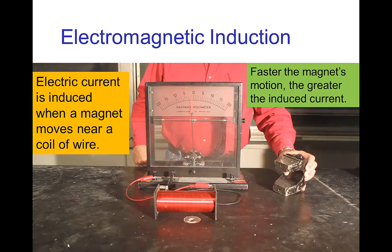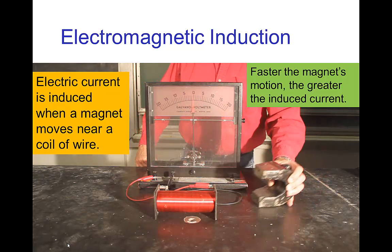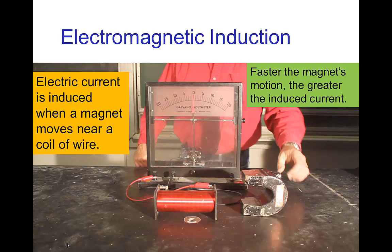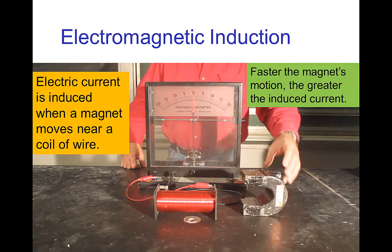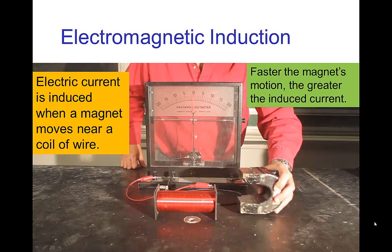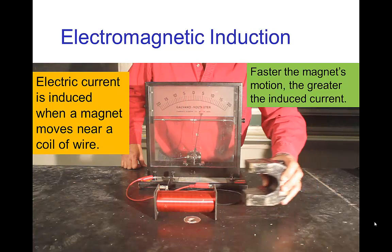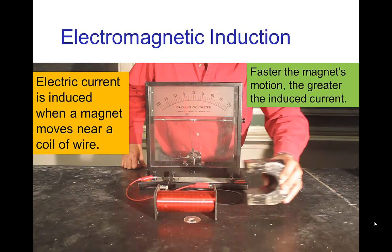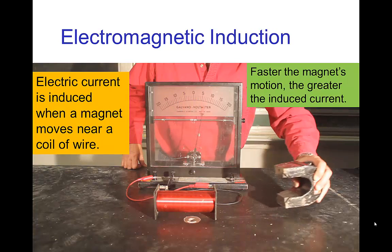Now, when I just stop and place the magnet nearby, the current isn't produced. But as soon as I start moving the magnet, I'm getting a nice big current.